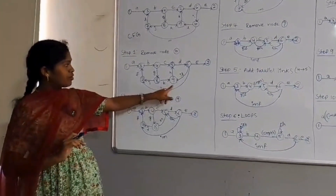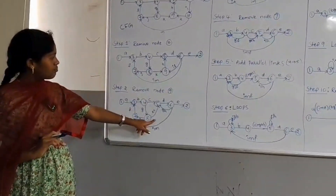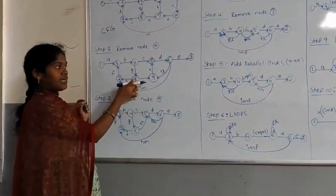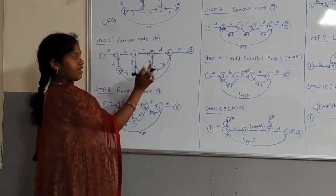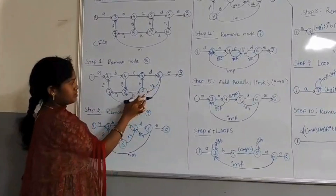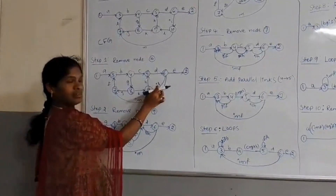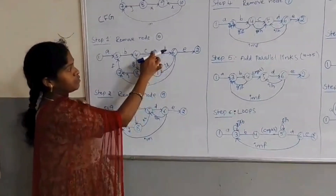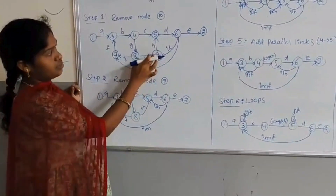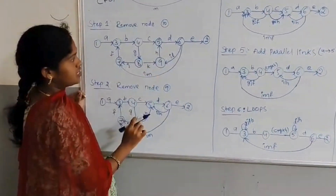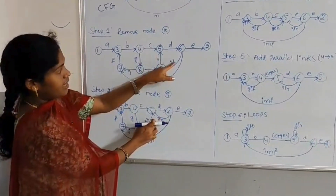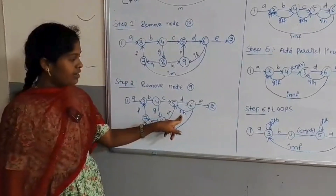In the next step, I am removing the 9th node. By removing the 9th node, there is a connection from 6 to 9 and 9 to 5. From 6 to 9, the link weight is IL, and the 9 to 5 link weight is H. These two links are in serial, so we have to multiply them. Then we will get the link weight from 6 to 5 as IL × H, that is ILH.